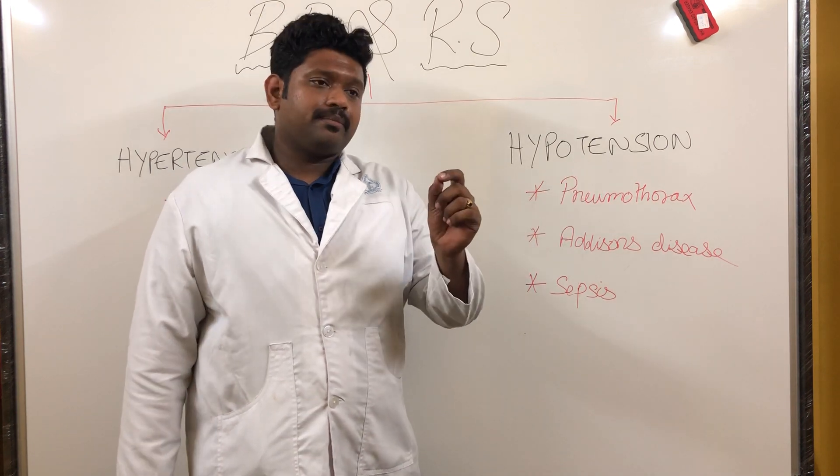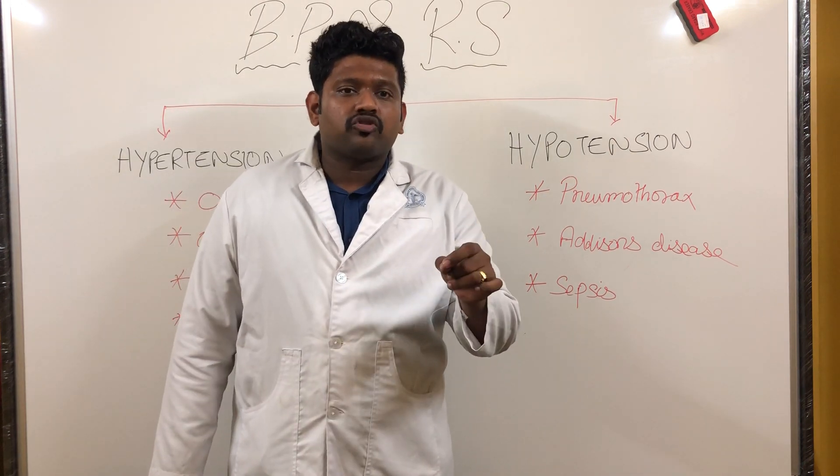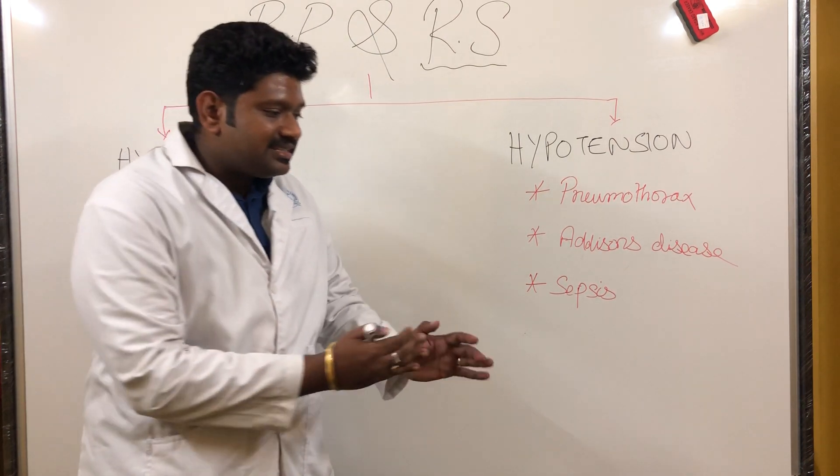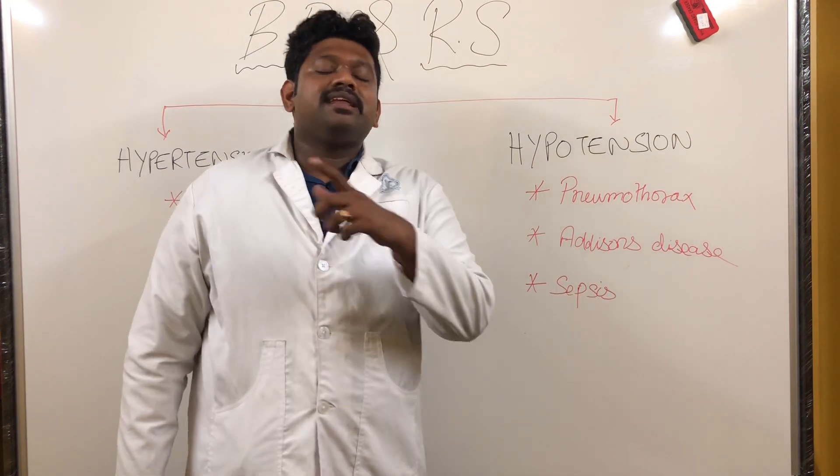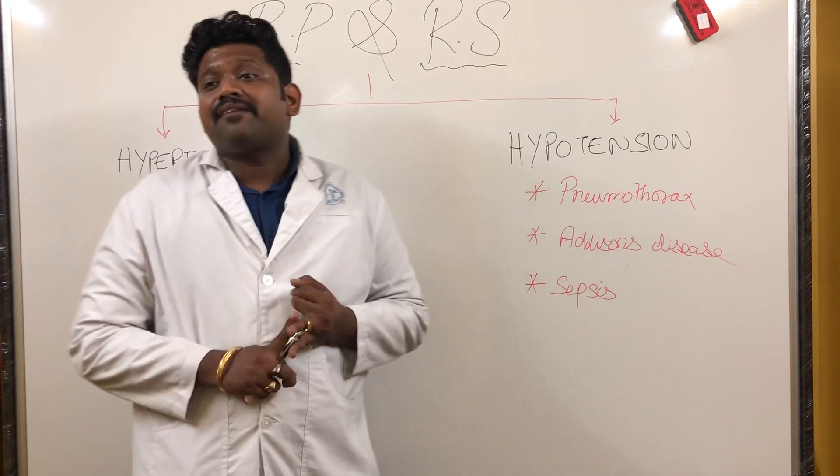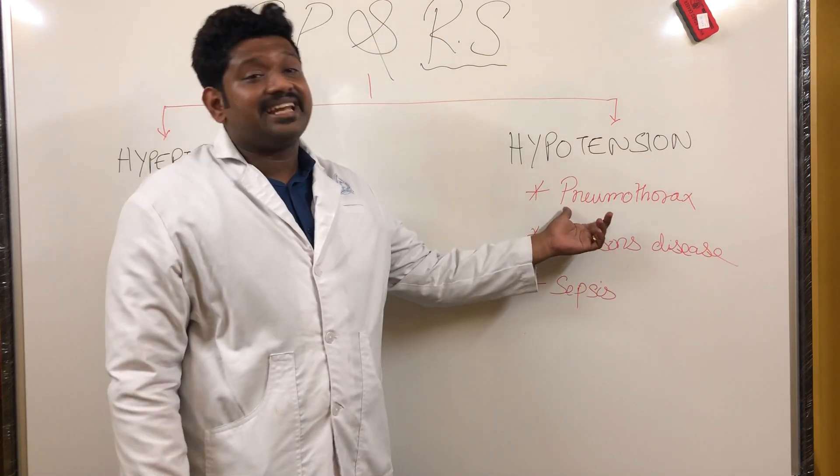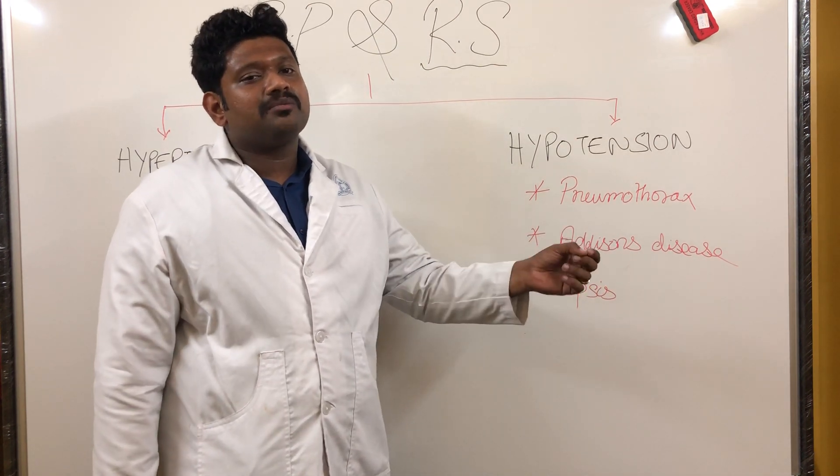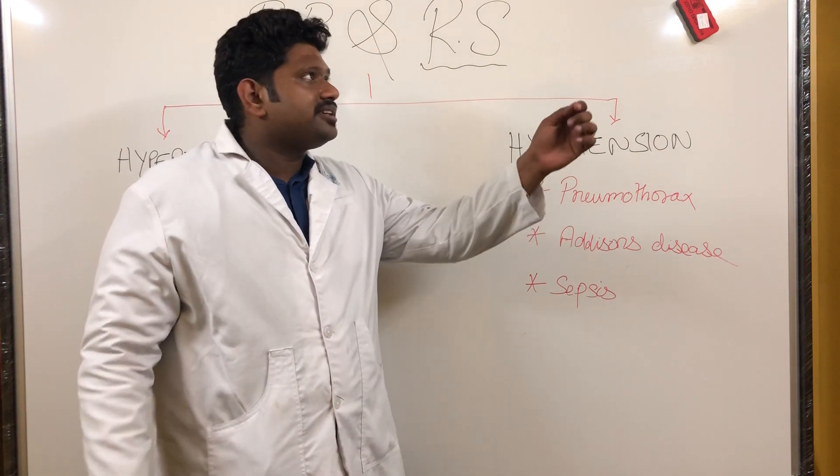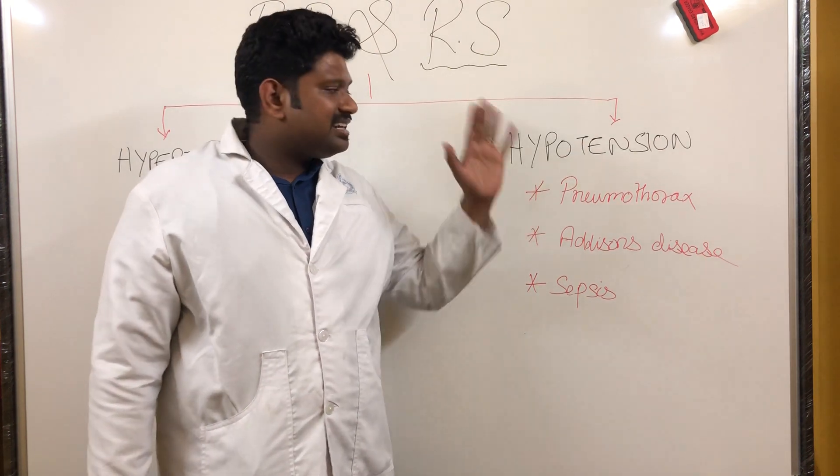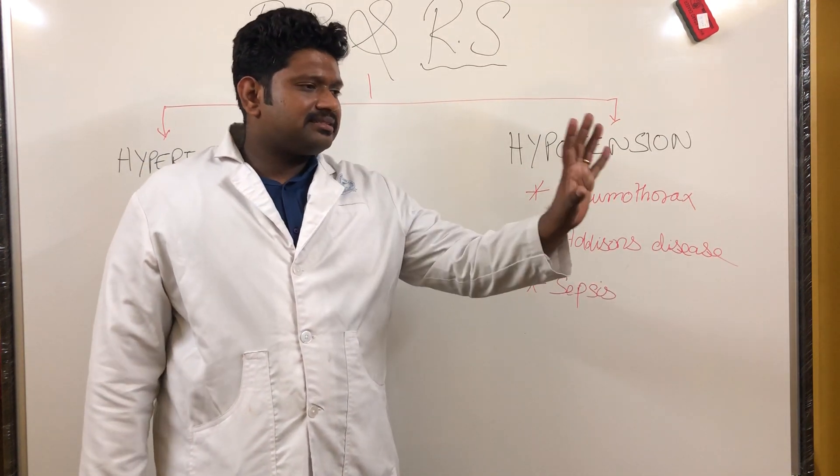Tension pneumothorax presents with hypotension. It's not an ordinary pneumothorax - tension pneumothorax is a clinical term meaning the patient is vitally unstable: having low BP, high pulse rate, fall in saturation. Tension pneumothorax is purely a clinical diagnosis, not something diagnosed by x-ray. So BP hypotension with RS breathlessness - think of tension pneumothorax.